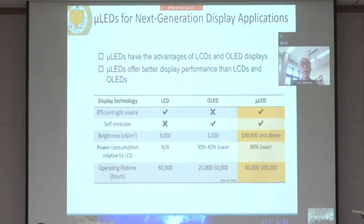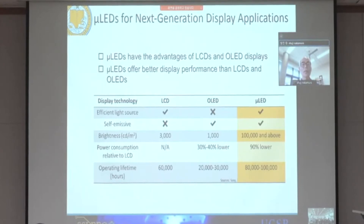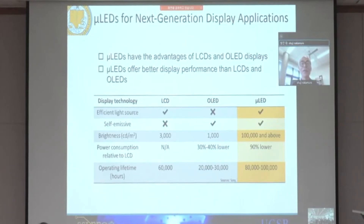This is a comparison of three displays: LCD, OLED display, and micro LED display. You can see all categories — efficient light source, self-emission, brightness, power consumption, operating characteristics — and in all categories, micro LED display is the best, except for one big problem. Right now the big problem is cost, and the cost is so huge. That is the problem.